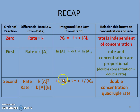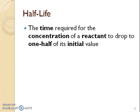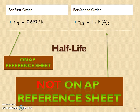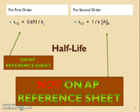AP exams concentrate more on first-order and second-order reactions. Half-life is the time required for the concentration of a reactant to drop to half of its initial value. The half-life for a first-order reaction is 0.693 divided by the rate constant K — that equation is on your reference sheet. The second-order half-life equation is not on the reference sheet, and that information would have to be given to you.